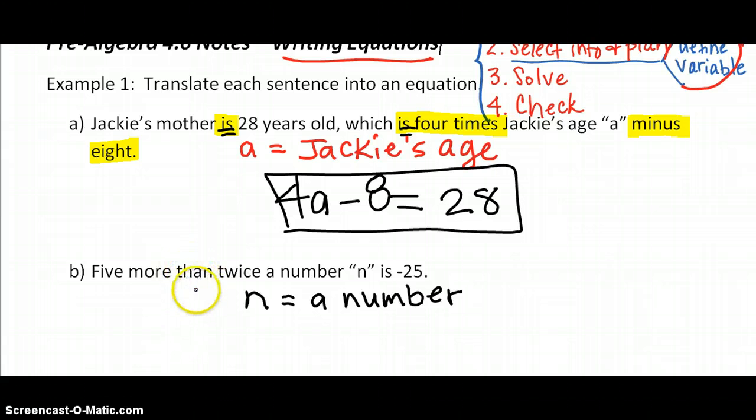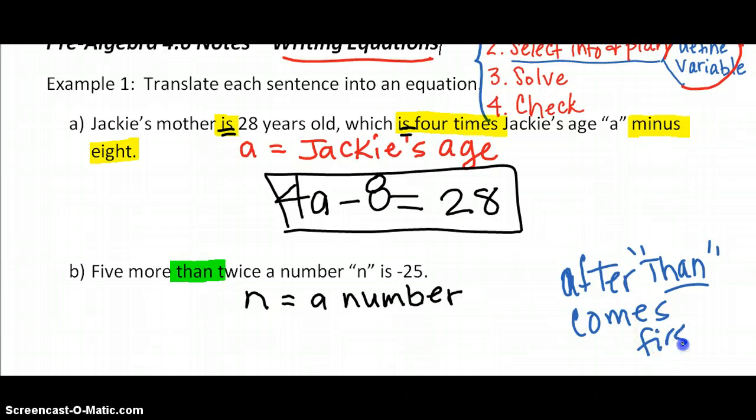Now let's read it one more time and try to understand what they're asking us to do here. Five more than, I have told you guys over and over the word than tells you anything that comes after than goes first. Whatever's after than comes first. After the word than, anything after than comes first.